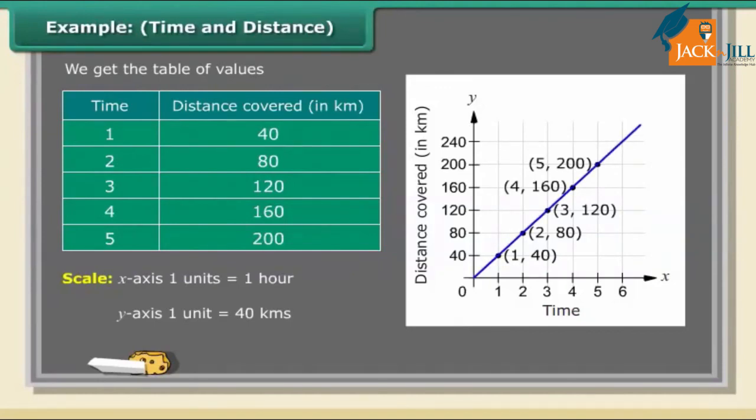1. On the vertical axis, 160 kilometers corresponds to 4 hours on the horizontal axis. 2. On the horizontal axis, 2.5 hours corresponds to 100 kilometers on the vertical axis. Therefore, Akshay covers 160 kilometers in 4 hours, and in 2.5 hours he is able to cover a distance of 100 kilometers.